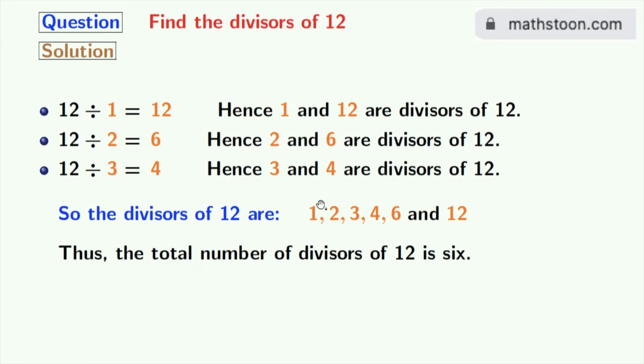Now if we look at these divisors, we can see that 2 and 3 among these numbers are prime numbers. Because these two numbers do not have any divisor other than 1 and that number itself. So we can say that the prime divisors of 12 are 2 and 3.